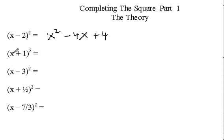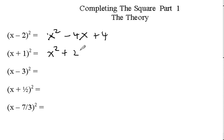For the next binomial, x times one is x, double that and we get two x as our middle term. Our first term is x squared, then x times one gives us x, we double that to get plus two x, then we square one to get plus one. That's how we square a binomial.